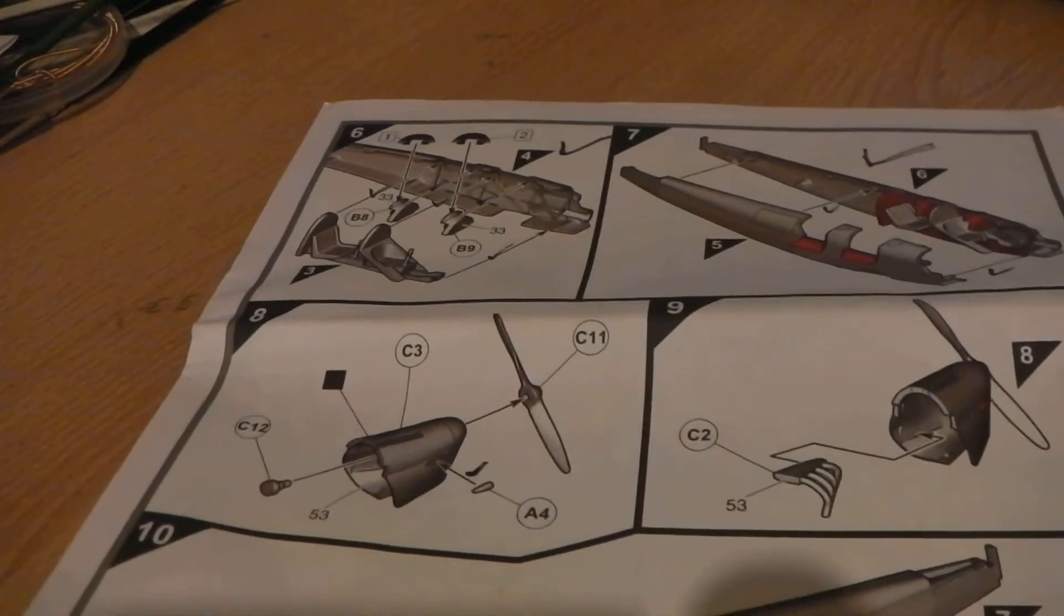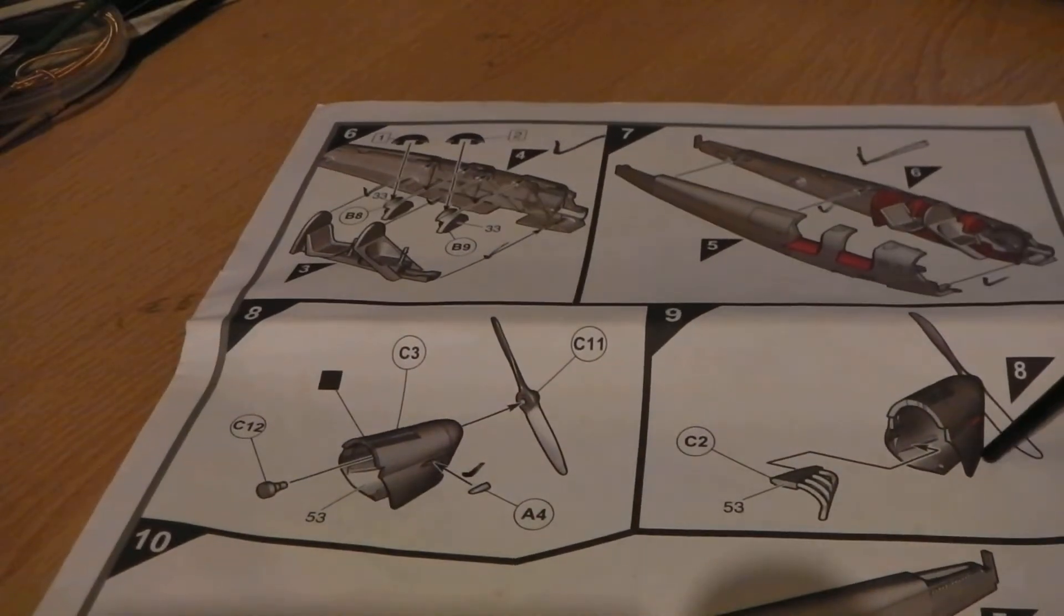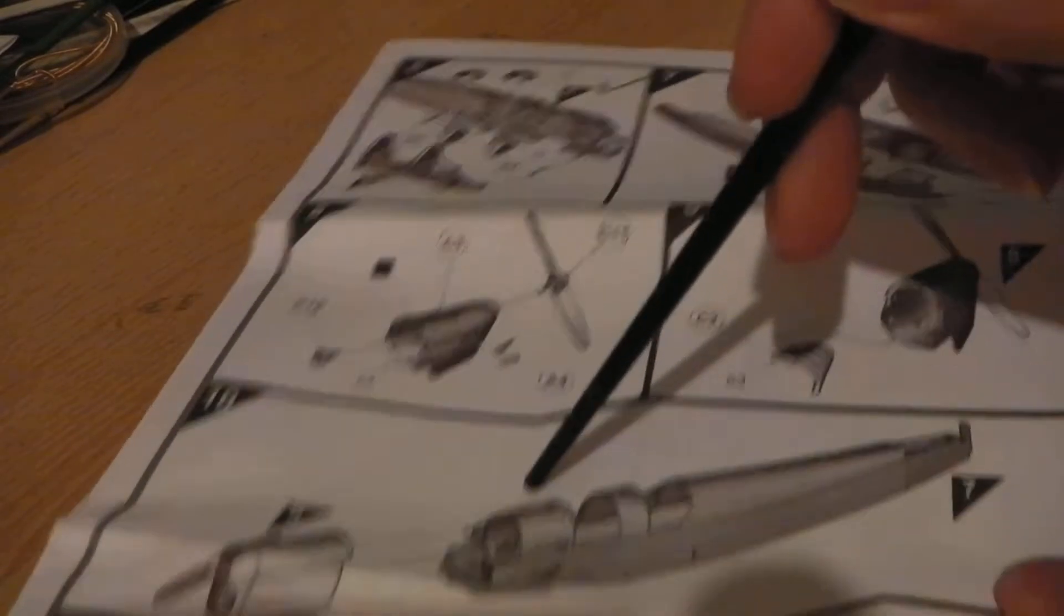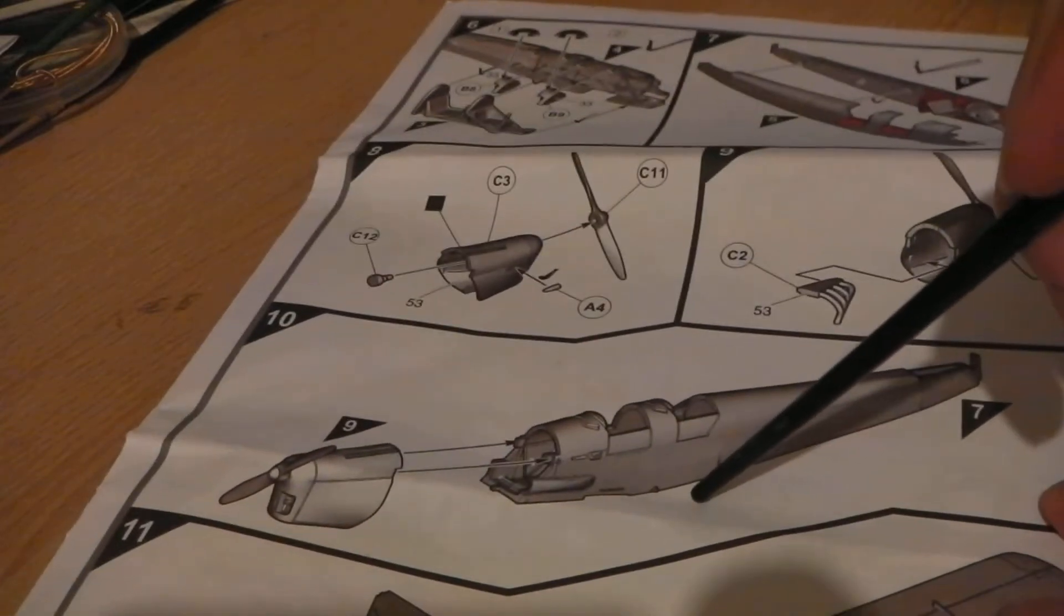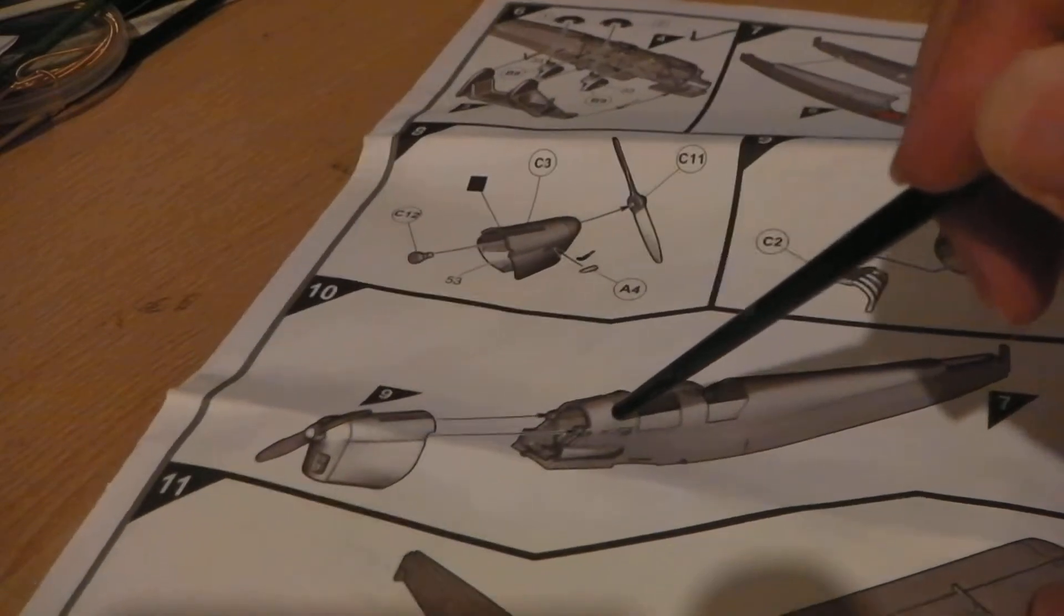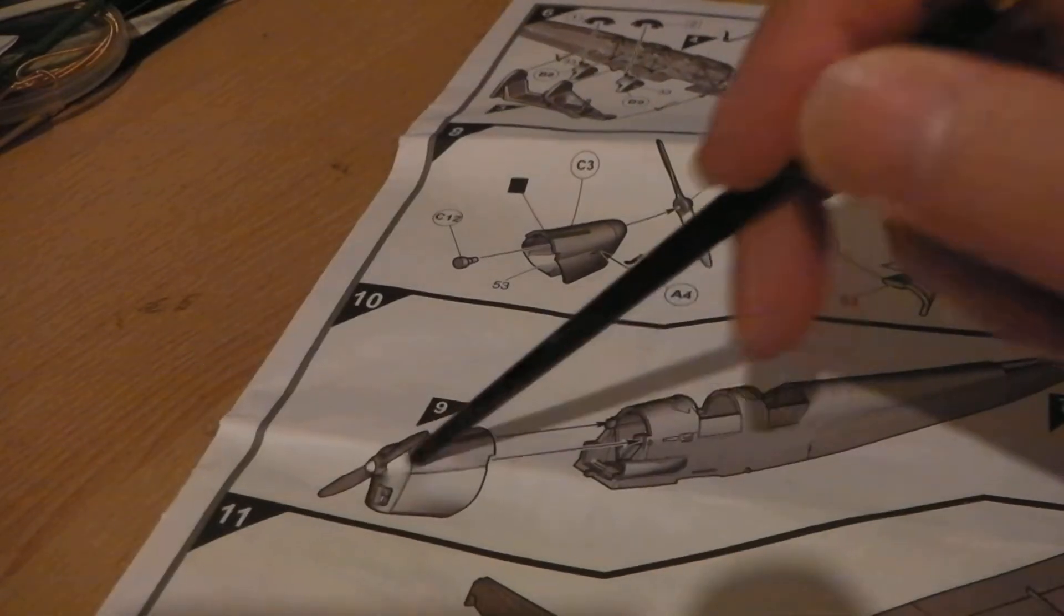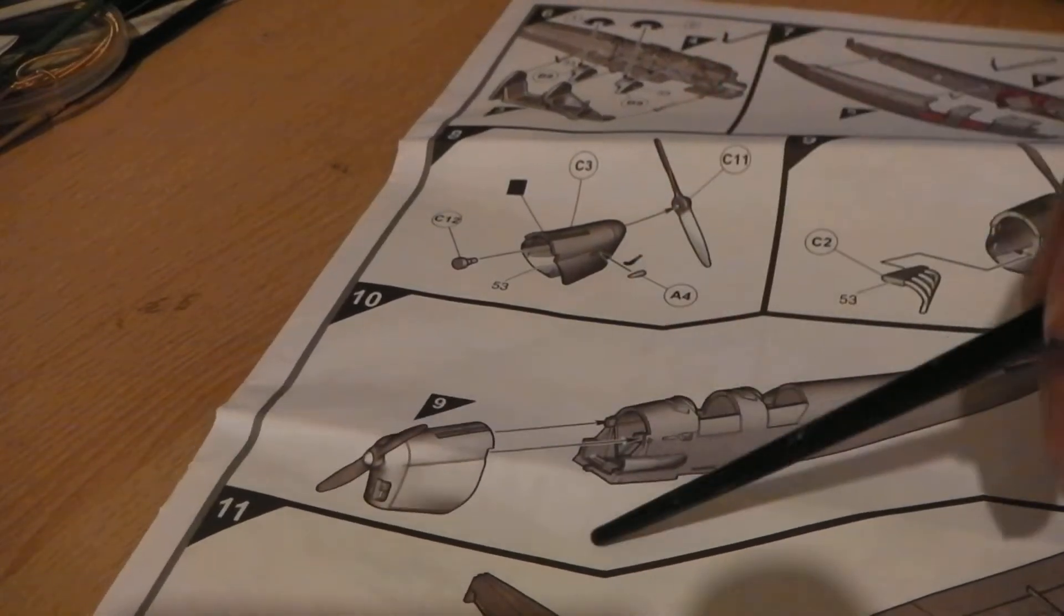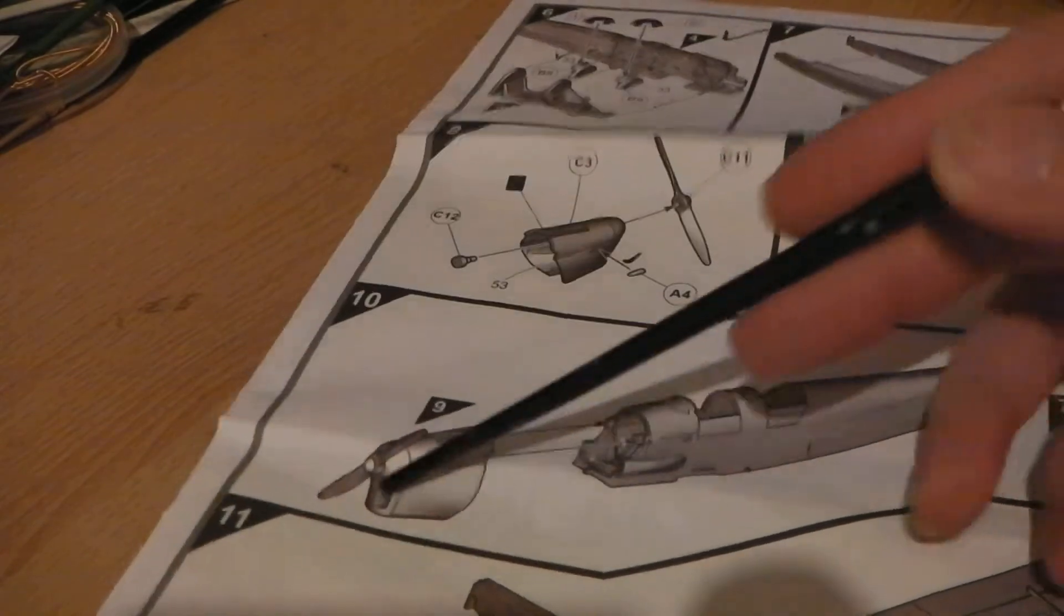But get to stage eight and nine, and they're talking already about the engine compartment and putting it onto the front of the fuselage. Now, I don't understand why you'd put it on the front of the fuselage and risk knocking the propeller off and having that sticking out wherever you go.